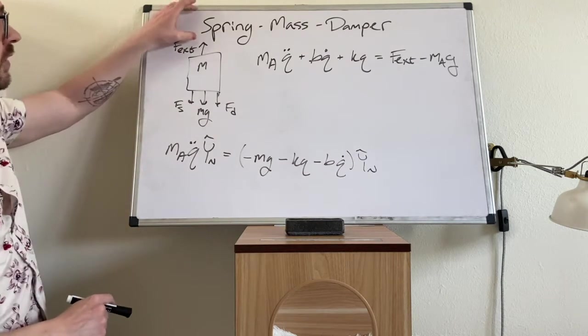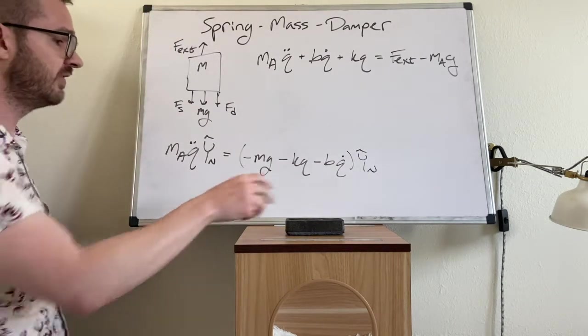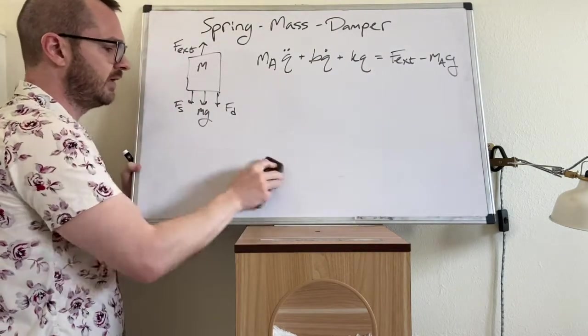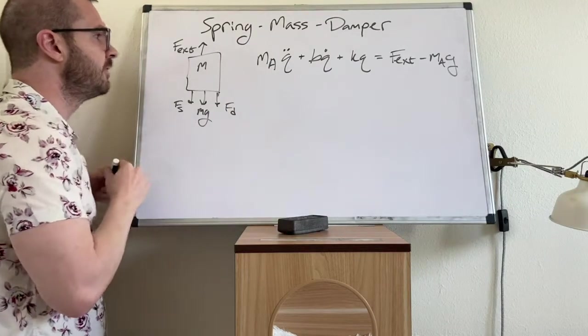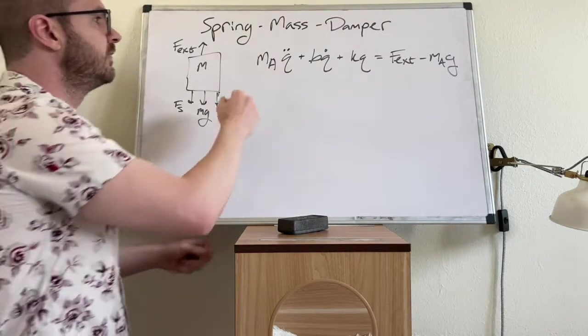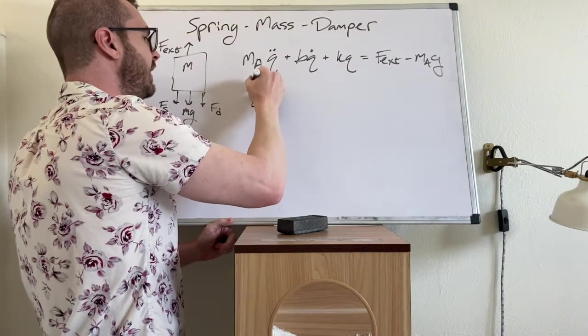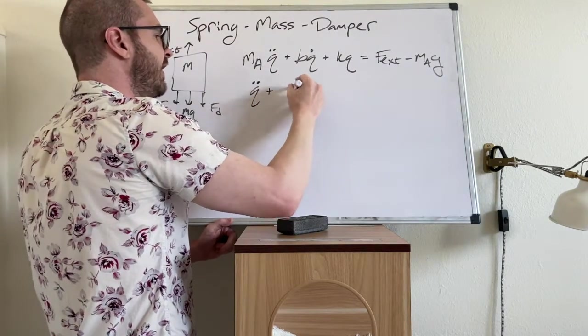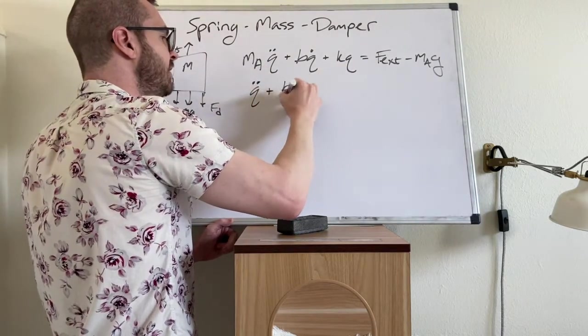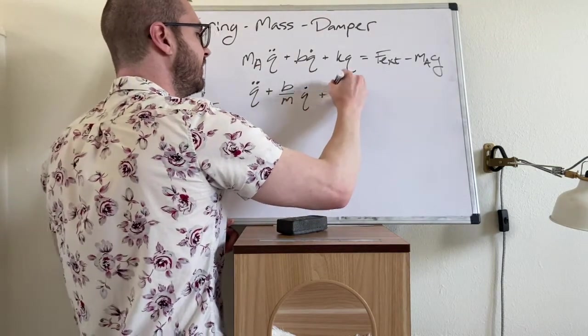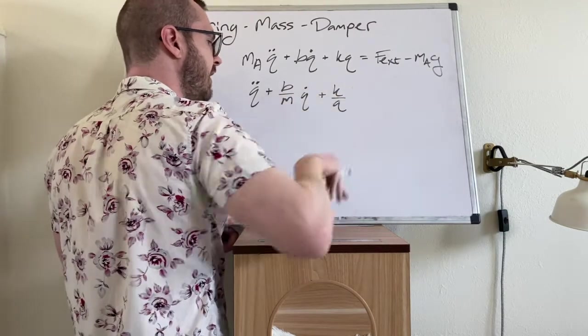So this is your spring mass damper system. And there's a lot of work that has been done analyzing spring mass damper systems. So here being the standard equation, we could also rewrite it. We could divide by the mass. So let's say B over M, and I'm going to drop that A notation, Q dot plus K over M.